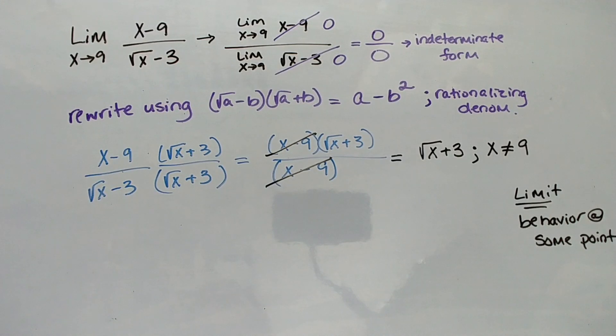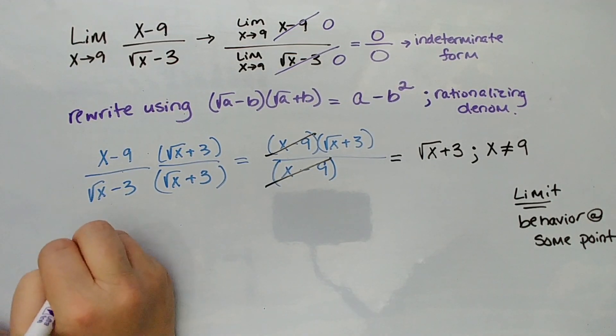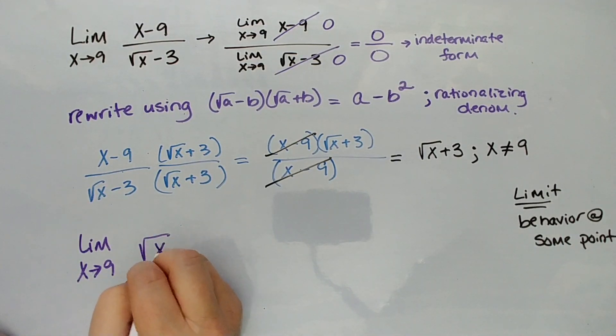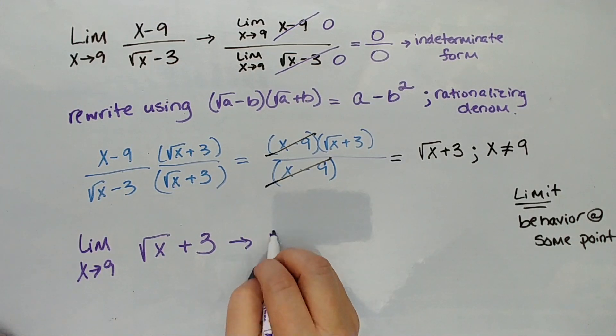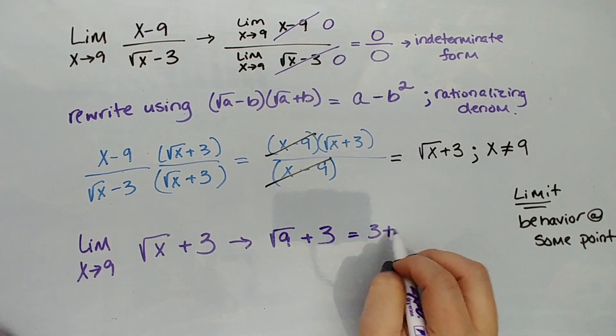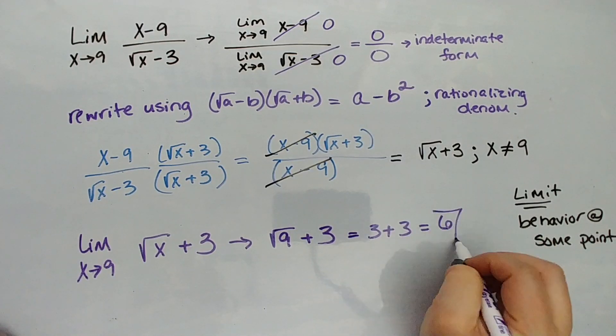So let's do this now. We can now plug in: limit as x approaches 9 for √x + 3. To do that, I'm going to plug in 9. We get √(9 + 3), which is √12. So we get 3 plus 3, which is 6.